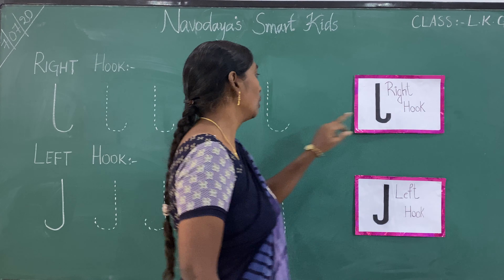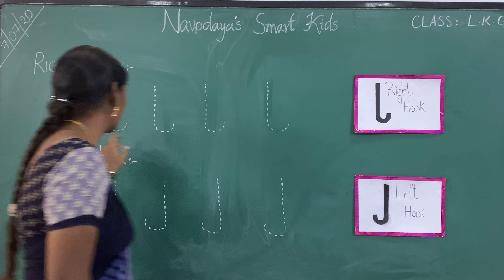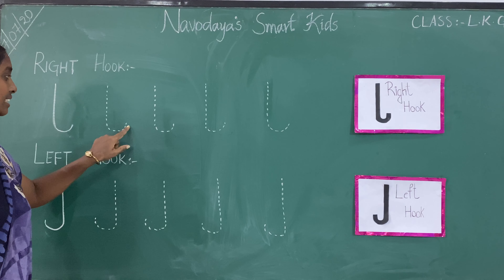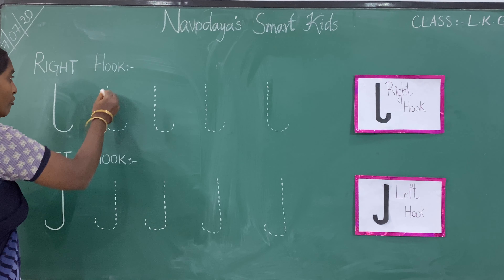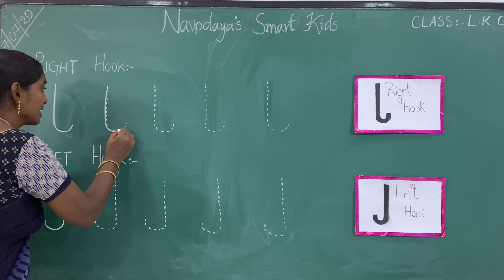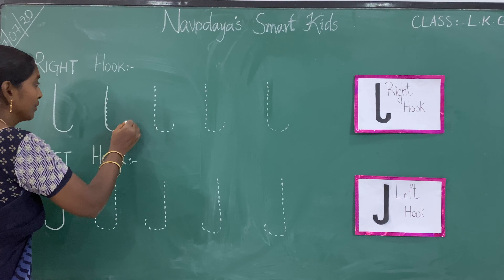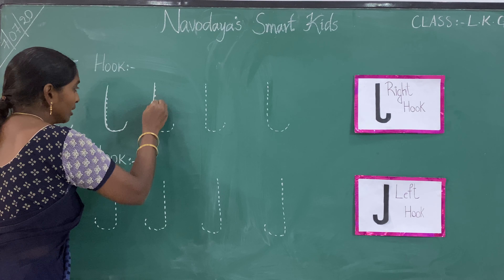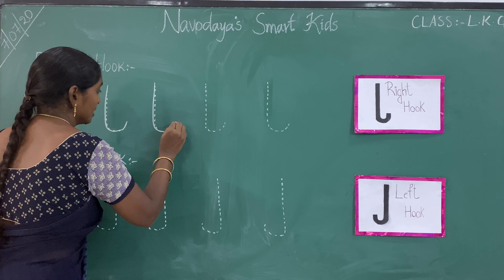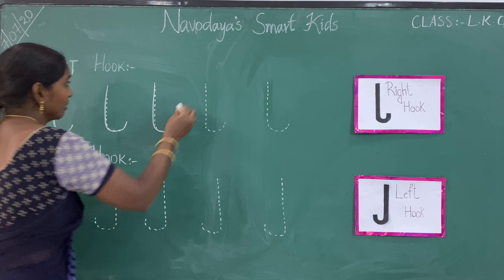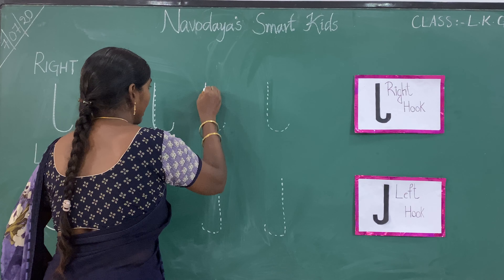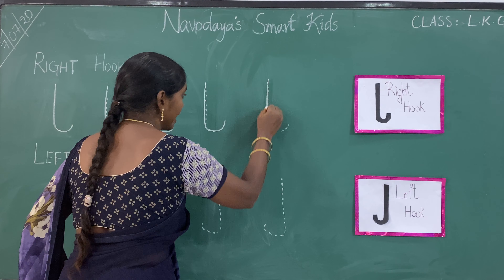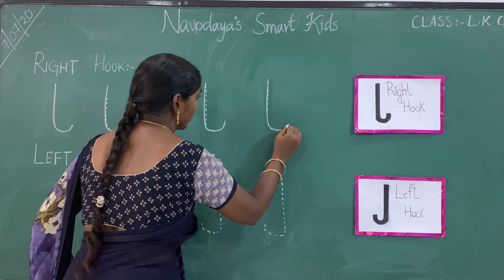Right hook. Look at the board children. We have some dots here. Now we join the dots. It makes a right hook. Look at the board children. Say with me — right hook. This is right hook.